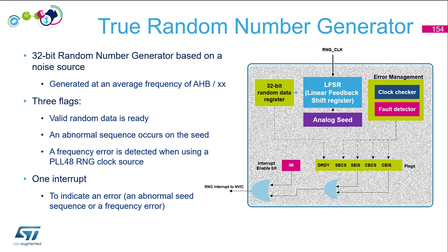The random number generator is based on an analog circuit made of several ring oscillators whose outputs are combined to generate the seeds that feed the linear feedback shift registers, producing a 32-bit random number. This linear feedback shift register is clocked by a dedicated RNG clock signal, so the quality of this one can be independent from the HCL frequency.